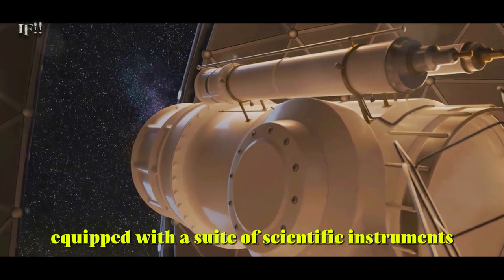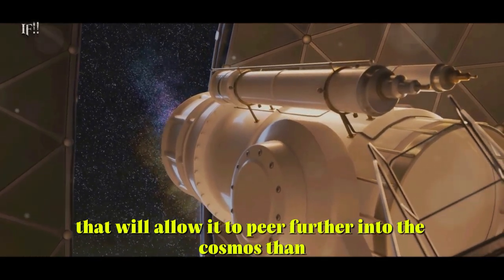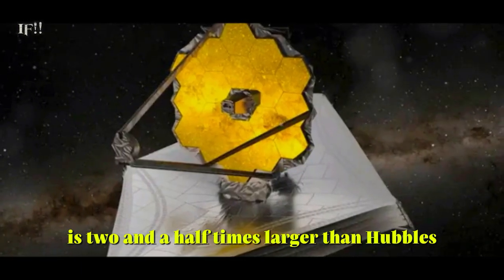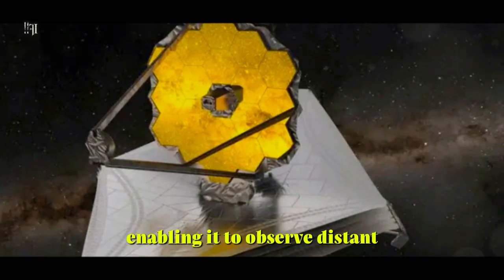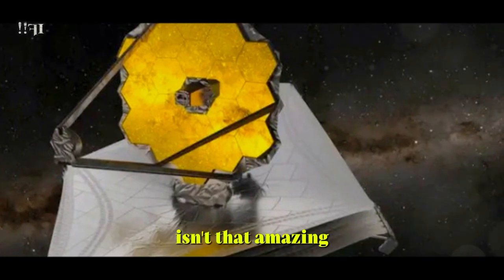You see, the JWST is equipped with a suite of scientific instruments that will allow it to peer further into the cosmos than ever before. Its primary mirror, for instance, is two and a half times larger than Hubble's. This allows the JWST to gather more light, enabling it to observe distant, faint objects that Hubble couldn't see. Isn't that amazing?